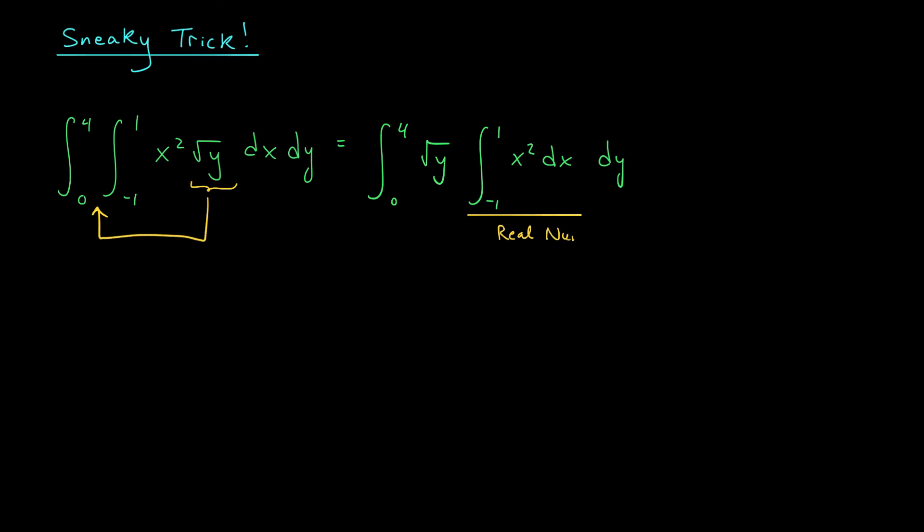So that's what we're going to do. We're going to pull this out front. We get the integral from minus 1 to 1 of x squared dx times the integral from 0 to 4 of root y dy. Ooh, what we've done here is we've separated this double integral into a product of two single integrals. We've taken the x's out as one integral. We've taken the y's out as a second integral.